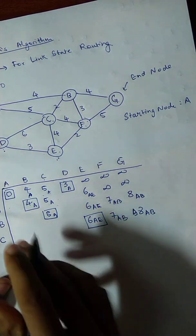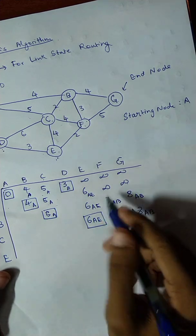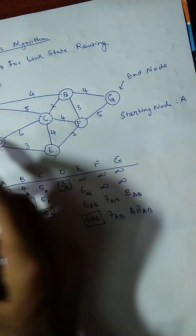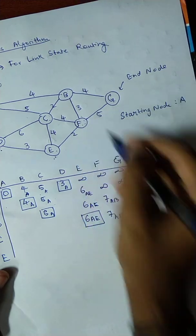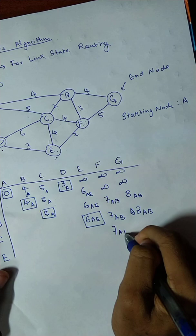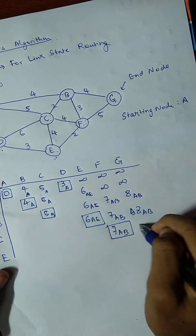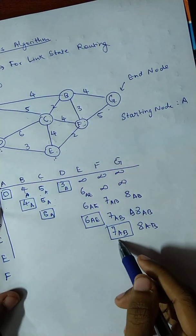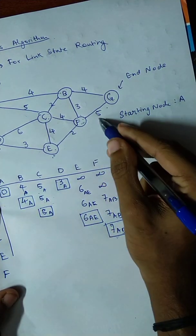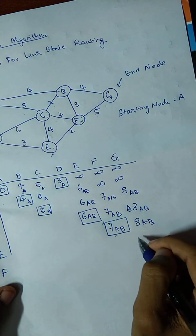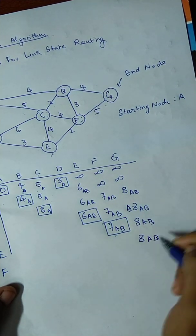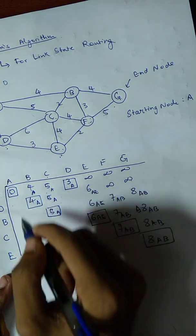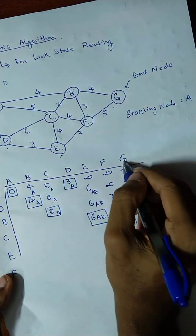We visit E next. From E we can visit F — D and C are already visited. From E to F the distance is 2, so 6+2=8, but 7 is already smaller so we carry forward 7. We then visit F. From F to G the distance is 5, so 7+5=12, but we already have 8, so 8 is the smallest distance. We have found that the shortest distance to reach G from A is 8.